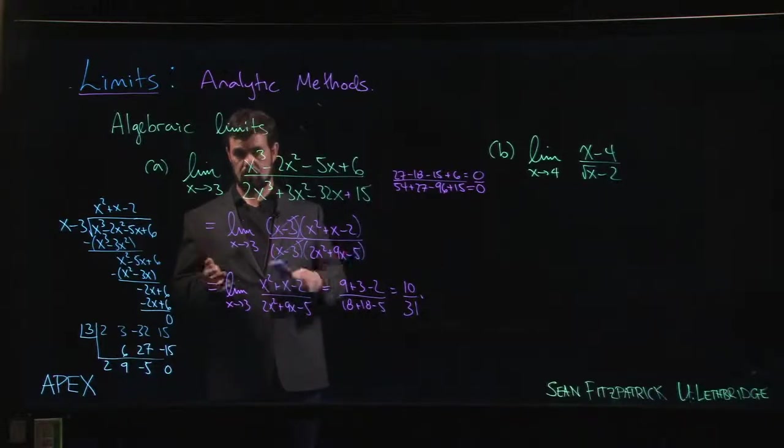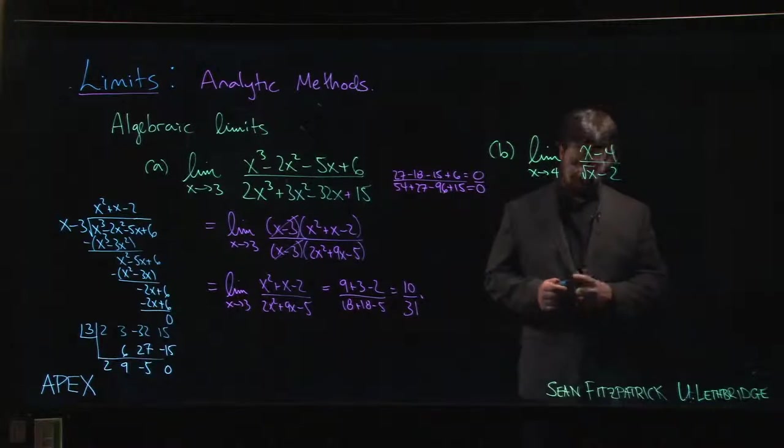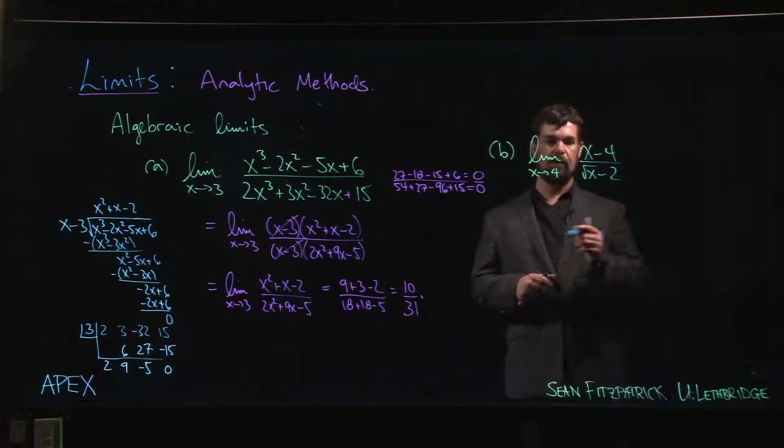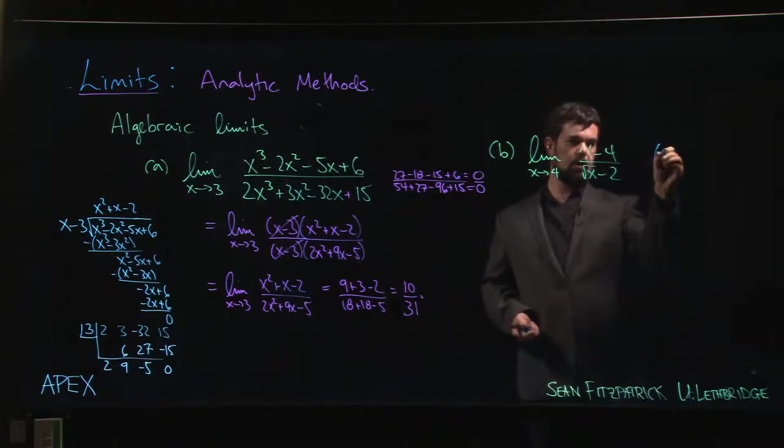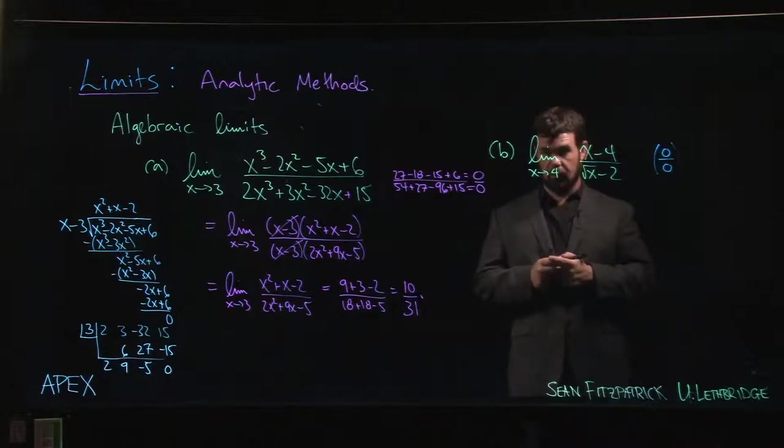But we also know that there is a root rule for limits, so if we want to take the limit of a square root, we know we can do that, so we're fine. The only issue is that once again, if you try to do a direct substitution—the square root of 4 is 2—so once again this is a 0 over 0 type limit. It's an indeterminate form.